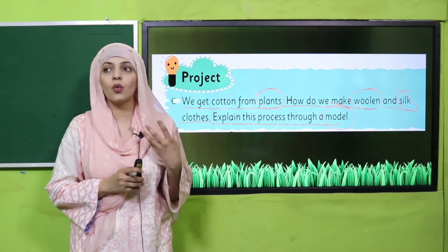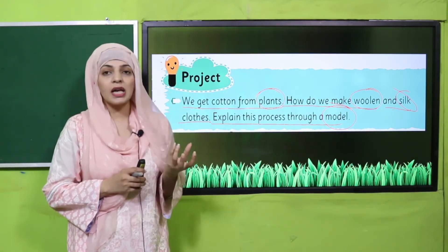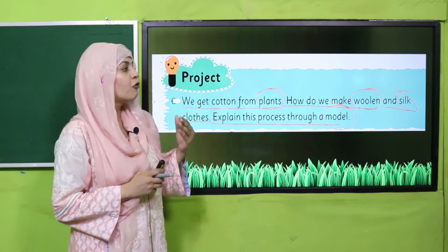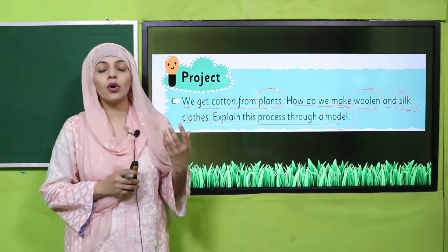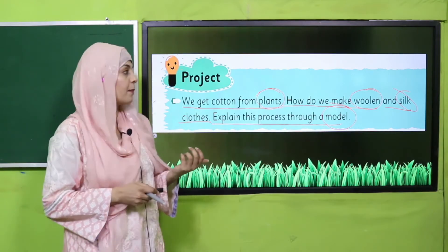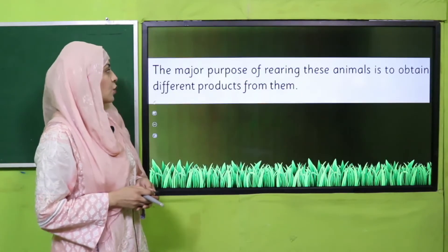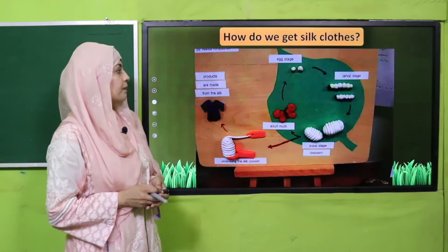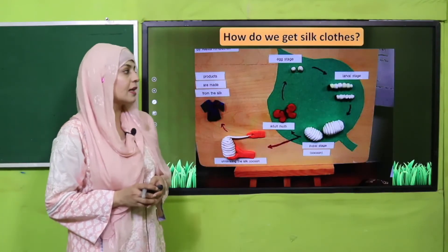Jiasse hum cotton jo hai woh paudon se hasil karte hain — rui isi tarah. Woolen aur silk clothes ke liye kahan se inki cheezhen hasil ki jati hain, is par ham ek model banayenge. So my dear students, the major purpose of rearing these — how do we get silk clothes?